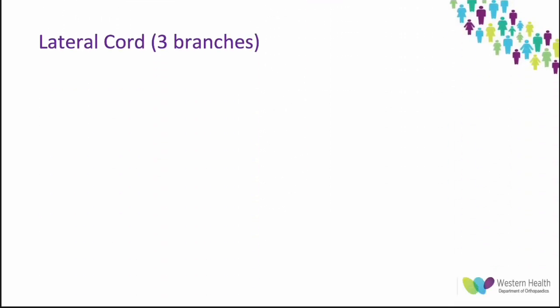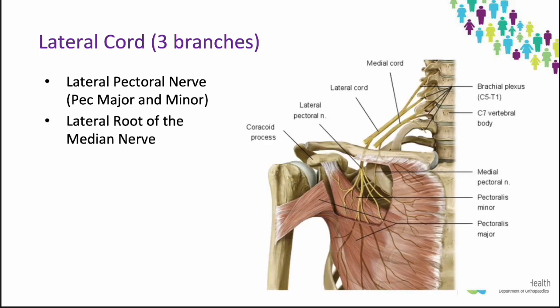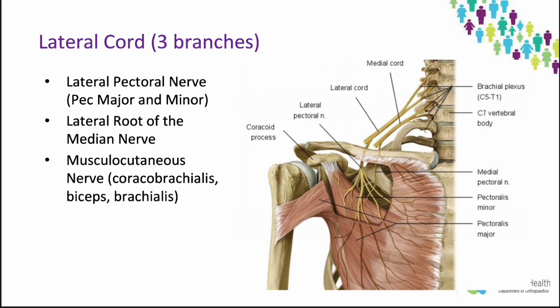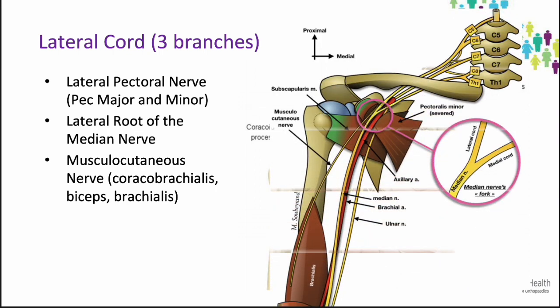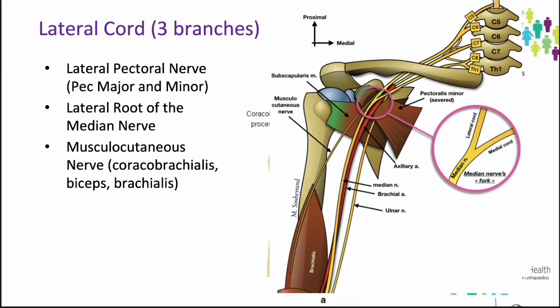The lateral cord has three branches. The lateral pectoral nerve pierces the clavipectoral fascia to supply pectoralis major and minor. The lateral root of the median nerve is a contribution of the lateral cord, joined by the medial root of the medial cord. The musculocutaneous nerve leaves the lateral cord, runs obliquely downward, sinks into the coracobrachialis — passing through and supplying it — then runs between the biceps and brachialis, innervating both, and continues as the lateral cutaneous nerve of the forearm.